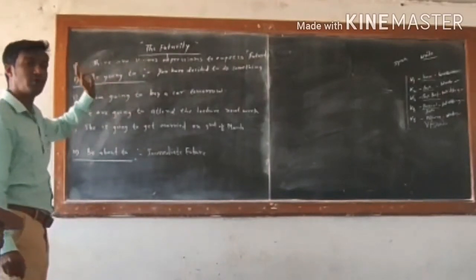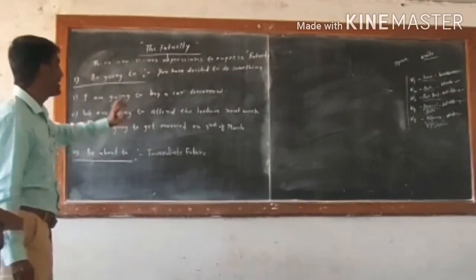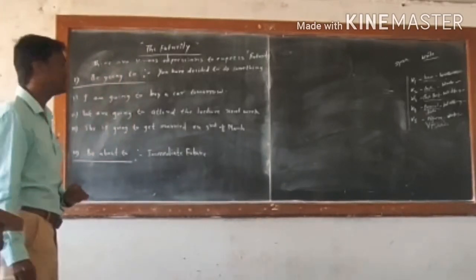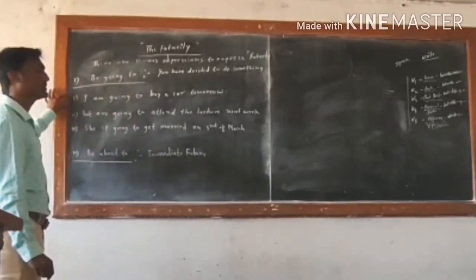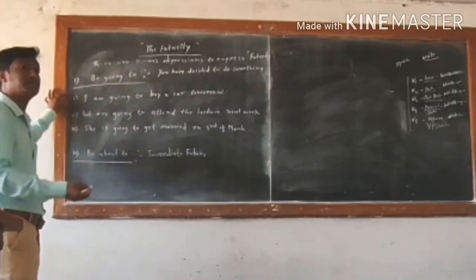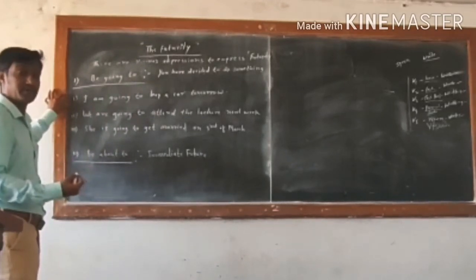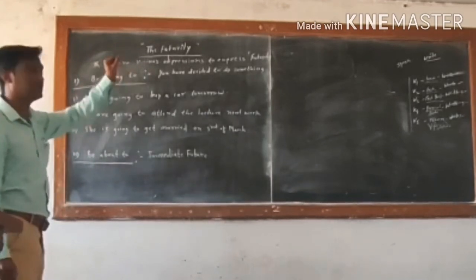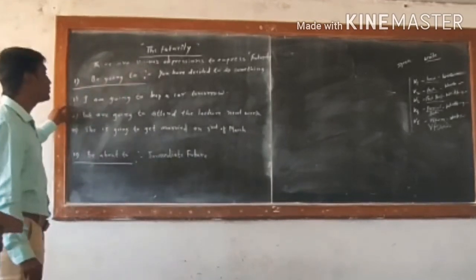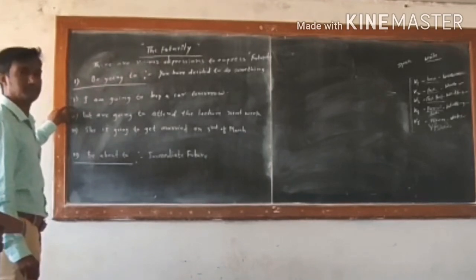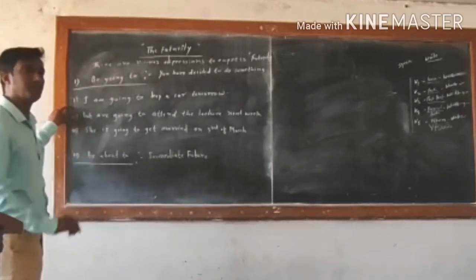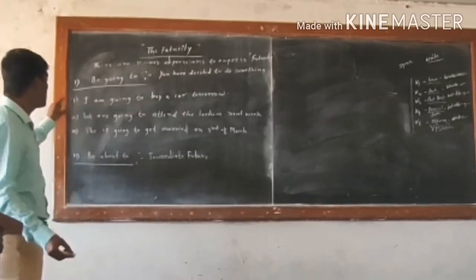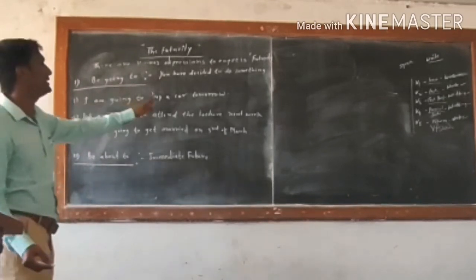'Be going to' is the form of 'to be' plus 'going to,' and it is used to talk about the future. For example: 'I am going to buy a car tomorrow,' because I have already decided — I have made up a plan to buy it. Similarly, 'We are going to attend the lecture next week,' because you will be attending it regularly after your program.